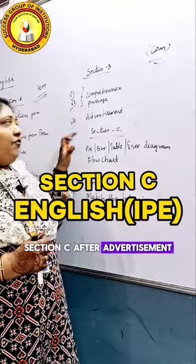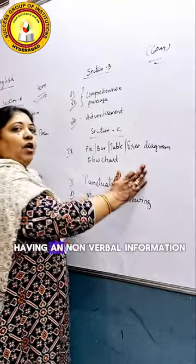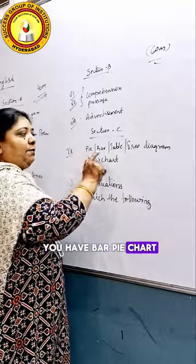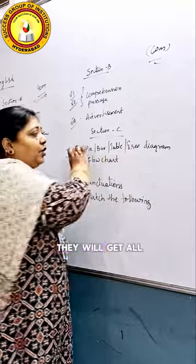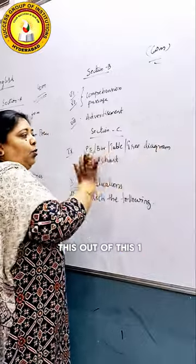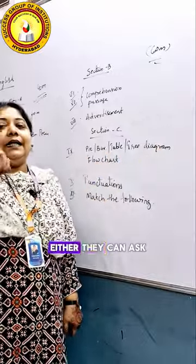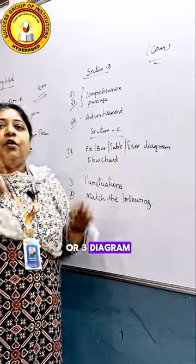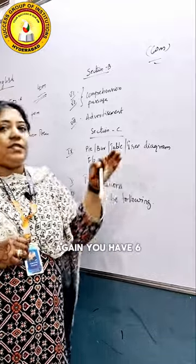Down to section C, after the advertisement, you will have the nonverbal information section. It includes pie chart, bar graph, table, tree diagram, and flow chart. It is not like you will get all of these — out of these four or five topics they can ask you any one, either bar graph, pie chart, table, or tree diagram.